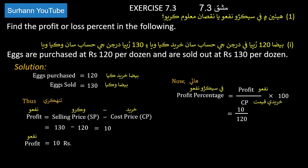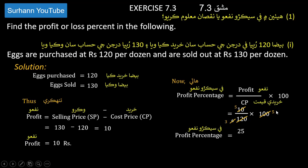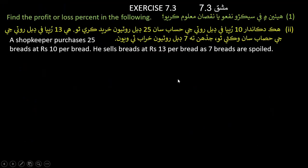Cost price is 120 rupees, so profit percentage = 10/120 × 100. Dividing: 100 divided by 20 gives 5, and 120 divided by 6 gives 20, then simplified further. The profit percentage is 25/3 percent.